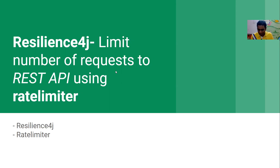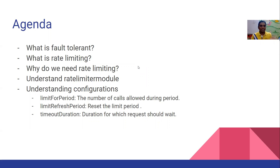Let us understand a few terms. What is fault tolerant? In a microservice landscape, when you have several microservices, if a particular microservice has any issues — either slowness or errors — that shouldn't bring the entire system down. A microservice application will have several microservices; if one particular microservice is down, the entire application shouldn't go down. To achieve that functionality we have libraries like Resilience4j or Hystrix from Netflix. In this session we are going to see the Resilience4j library.